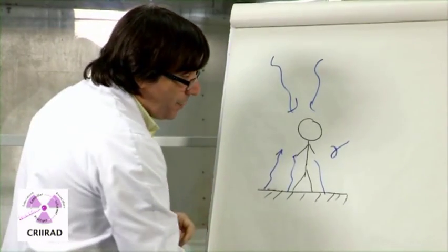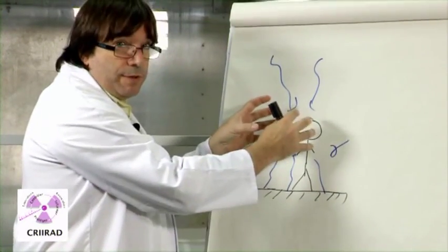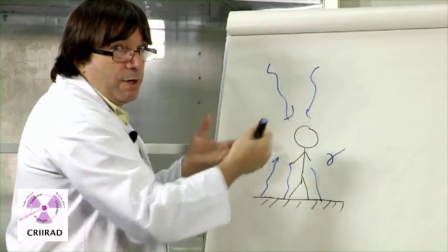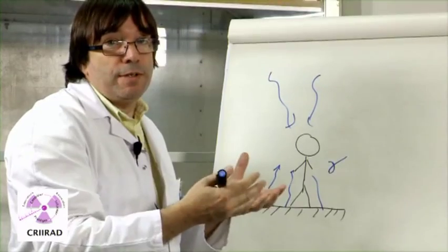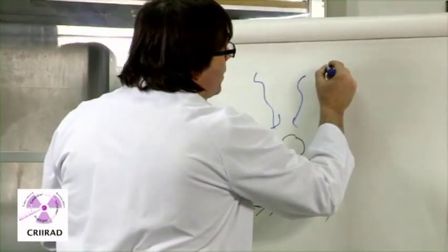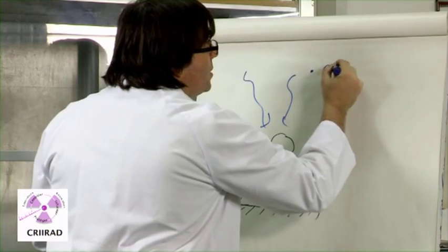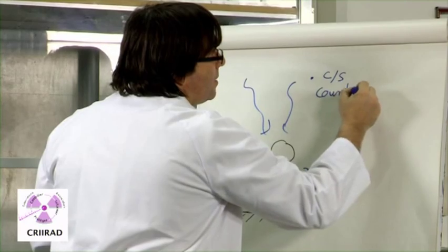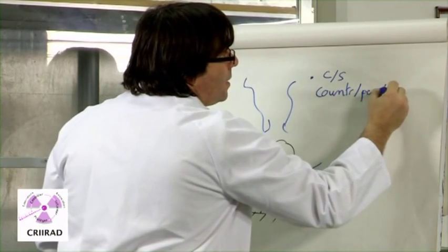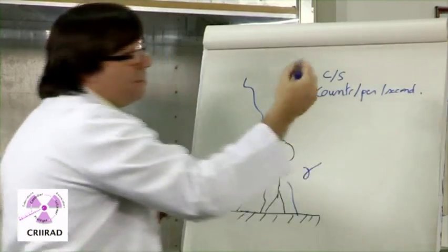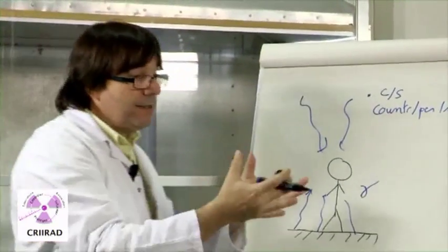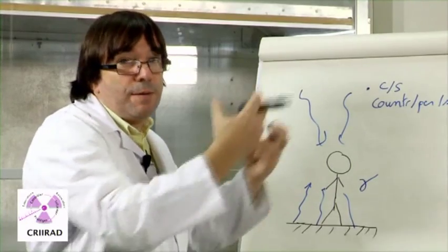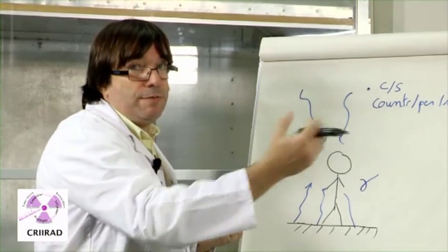So, if we make a measurement of the radiation coming from the sky and the soil, we will have a figure. This figure can be counts per second. It means that if we measure, for example, 50 counts per second with a device, it means that at each second, 50 gamma radiations are entering into the device.